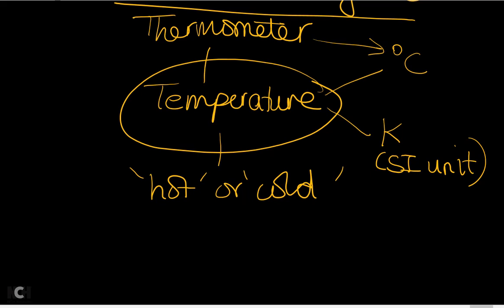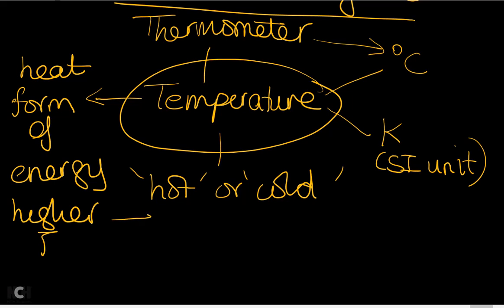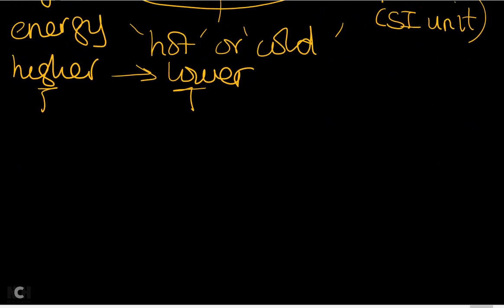Temperature dictates how heat flows. Heat is a form of energy and it flows from a body of higher temperature to one of lower temperature. The greater the temperature difference, the faster heat will flow.